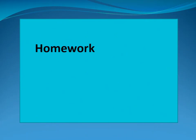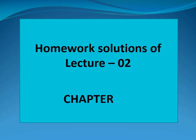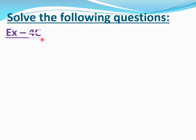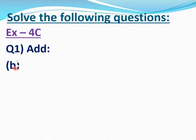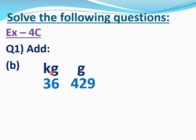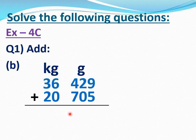Now I will discuss homework solutions of Lecture Number 2 of Chapter Number 4. Exercise 4C, Question Number 1, add B part. Write down kilogram, gram. Write first number: 36 kilograms 429 grams. Write second number: 20 kilograms 705 grams. Now add these. 9 plus 5 is 14, write 4 and carry 1. 1 plus 2 is 3, plus 0 is 3. 4 plus 7 is 11, write 1 and carry 1. 1 plus 6 is 7, plus 0 is 7. 3 plus 2 is 5. Answer is 57 kilograms 134 grams.